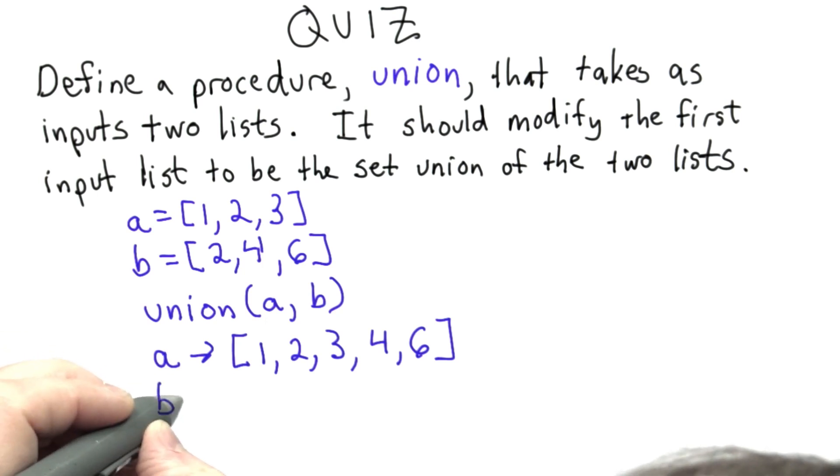I should mention that union should not modify the value of B. After the call to union AB, the value that B refers to should still be the list 2, 4, 6. So see if you can define the union procedure as described here.